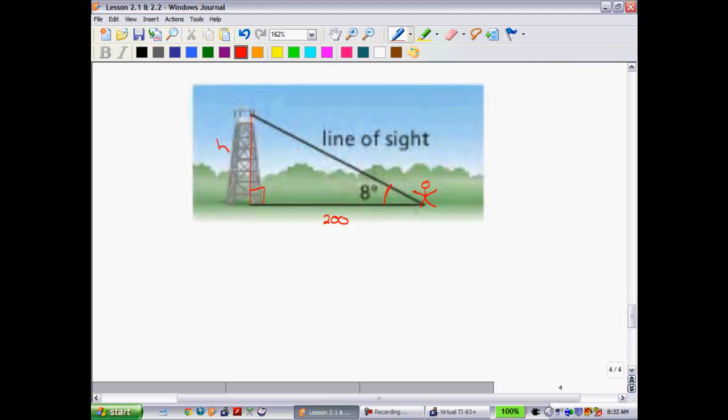So we are going to use the tangent ratio once again. So we start out with the tangent of our reference angle, which is 8 degrees, is equal to my opposite side, which is H, over the adjacent side, which is 200. Now to get H by itself, if you recall, what you can do is multiply both sides by 200. Just think that you bring this 200 up in front. So we have 200 times the tangent of 8 degrees is equal to H.